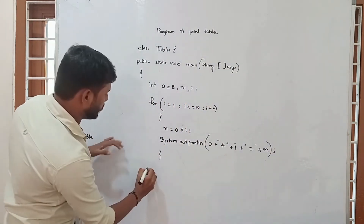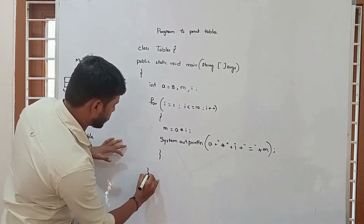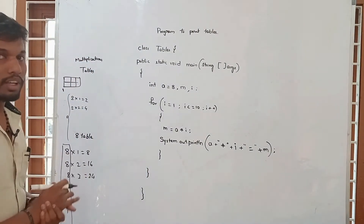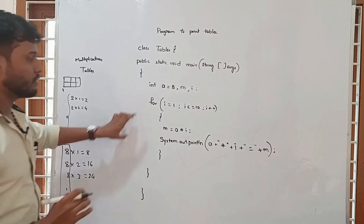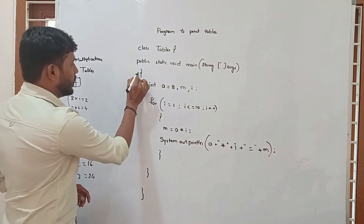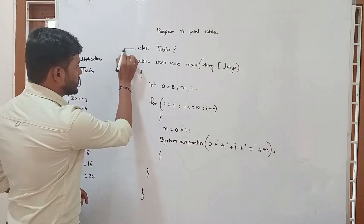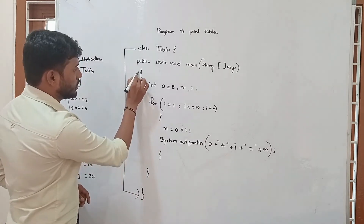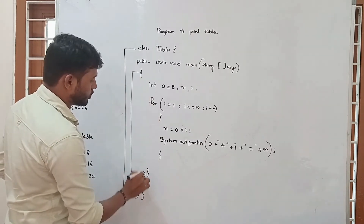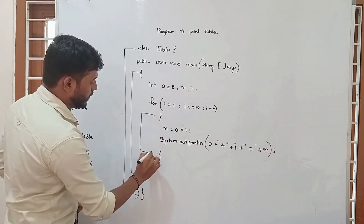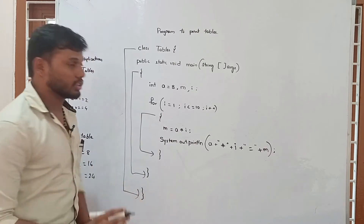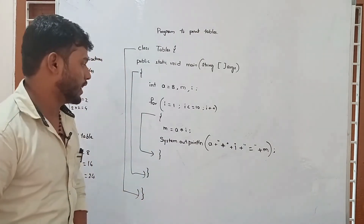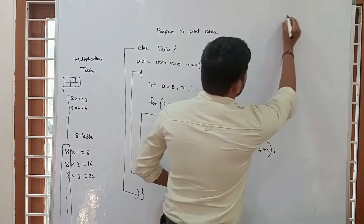Now close the for loop, close the method, and close the class. This is the program for printing a table. This is the class — open and closed. This is the method — open and closed. This is the for loop — open and closed. Now let us see how the execution will proceed, starting from loop number 1.